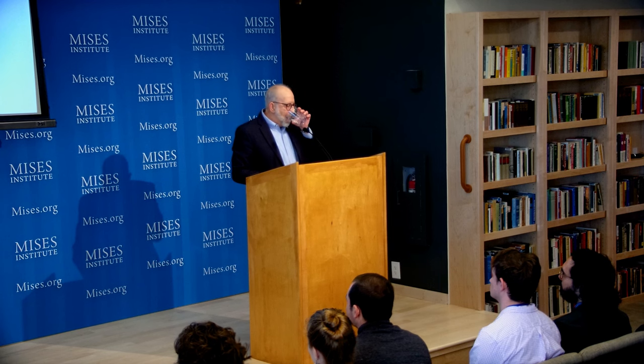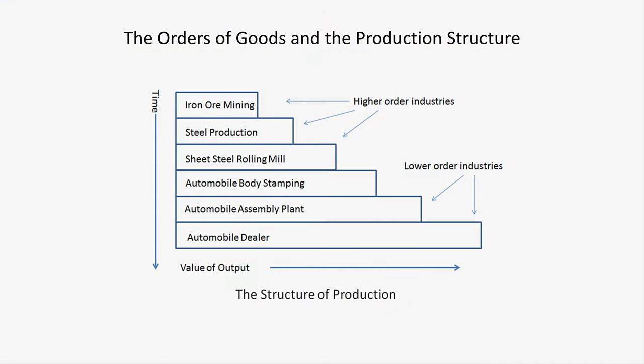Menger goes beyond this. He's very interested in causality and points out that it takes time to produce goods to satisfy our wants. Goods go through a process in which they are transformed. The definition of production is not the creation of value — it's the transformation of goods from less to more valuable goods. In 1802, the great French economist J.B. Say pointed out that production is not creation but transformation — only God could create, Say said. But man can transform elements of his environment into elements that are more useful to him: he can transform land and labor into consumer goods.